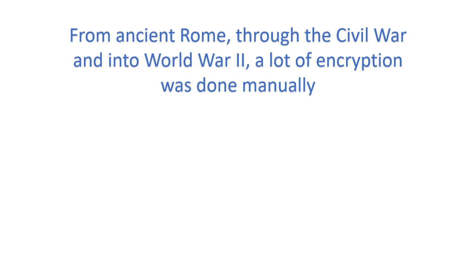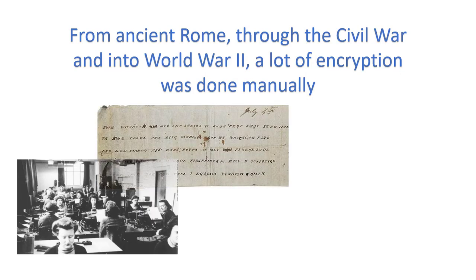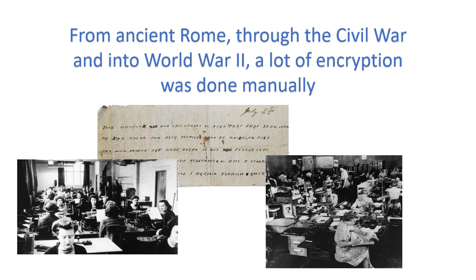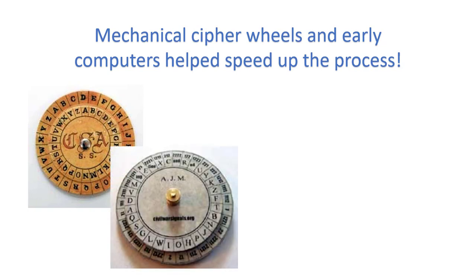From ancient Rome through the Civil War and into World War II, a lot of encryption was done manually. It was very slow and very tedious. Mechanical cipher wheels and early computers helped speed up the process.